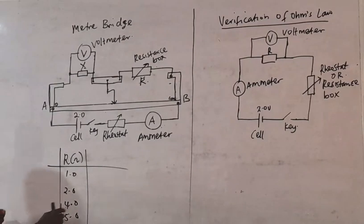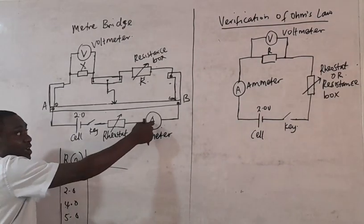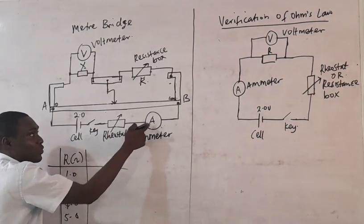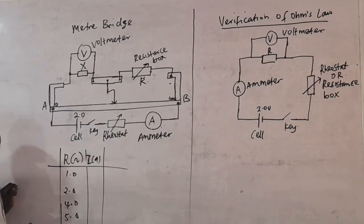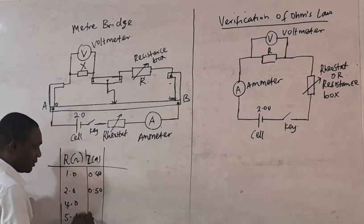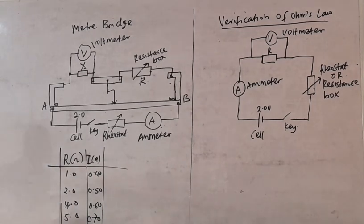Then they may ask you to adjust the rheostat to determine the current that flows through this point. To adjust the current that flows through, they may ask you to read the current. They may also ask you to slide the jockey on the length to determine the length in cm — maybe 0.40 A, 0.50 A, 0.60 A, 0.70 A, 0.80 A, 0.90 A, depending on what they ask you.